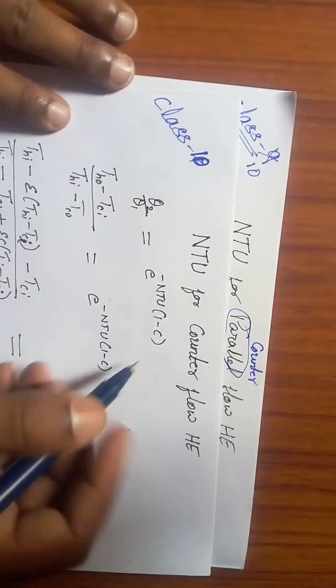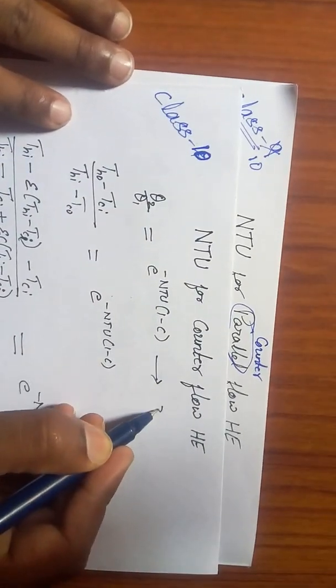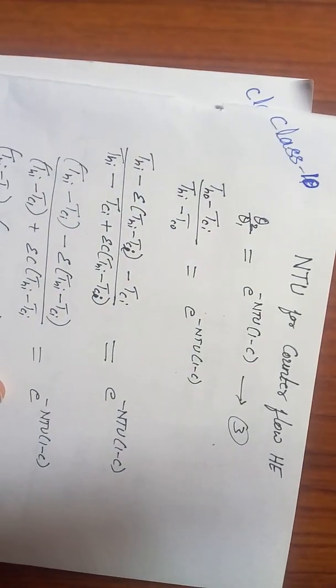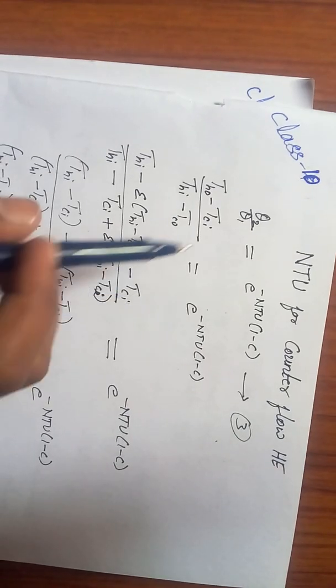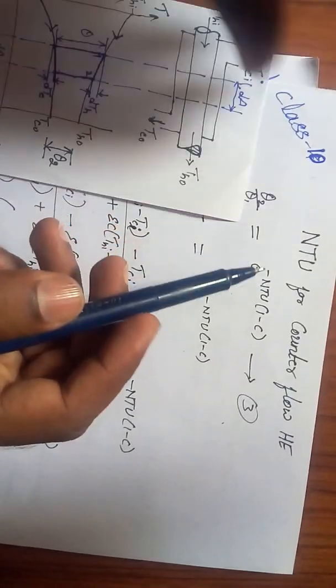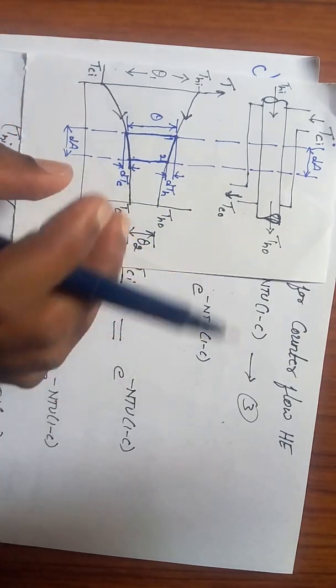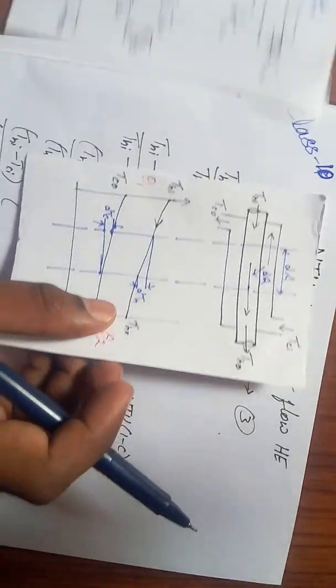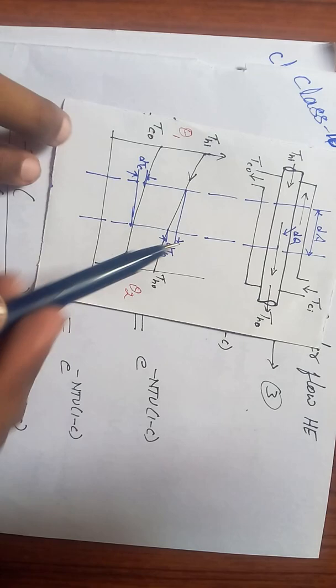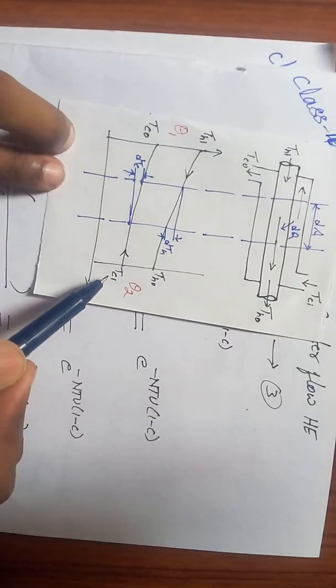From this equation, replace theta 2 and theta 1 with the help of the temperature variation. This is parallel flow, so this is counter flow. Now theta 2 is TH_out minus TC_in. I have written it, and theta 1 is TH_in minus TC_out.